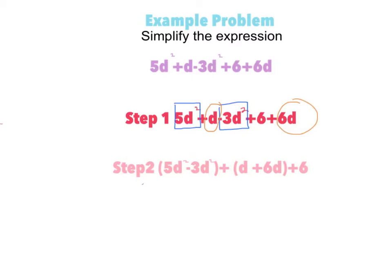We need to combine this by terms to solve this problem. We drew a square around 5d squared and minus 3d squared because they have the same variables and their power is the same. We also drew a circle around d and 6d because they have the same variables and are to the same power.